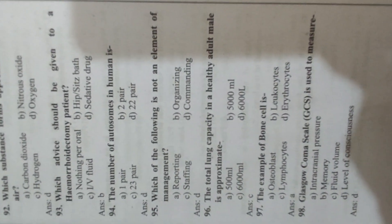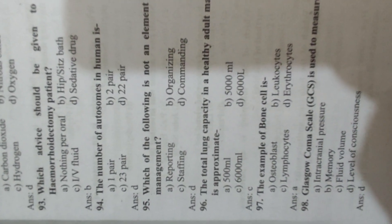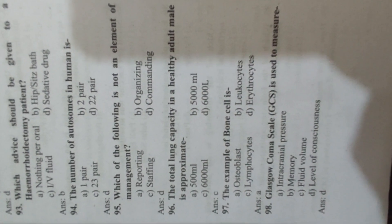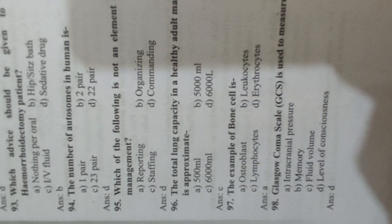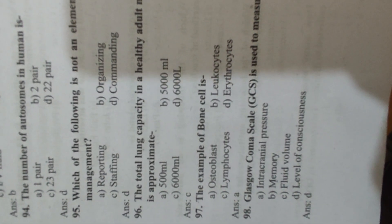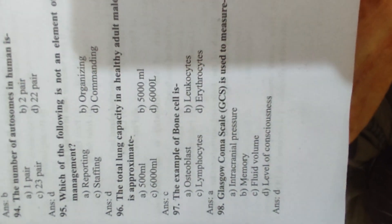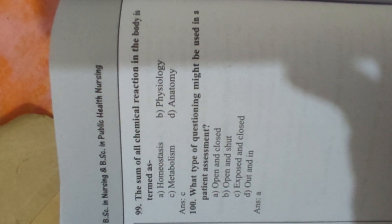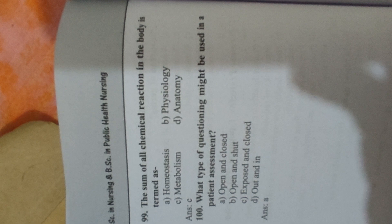Question 95: Which of the following is not an element of management? Answer D, commanding. Question 96: The total lung capacity in a healthy adult male is approximately 6000 ml. Question 97: An example of a bone cell is an osteoblast. Question 98: Glasgow Coma Scale is used to measure the level of consciousness. Question 99: The sum of all chemical reactions in the body is termed as Answer C, metabolism.